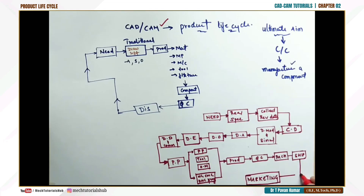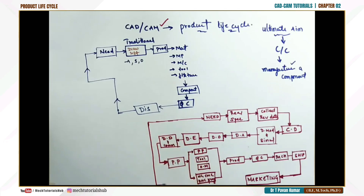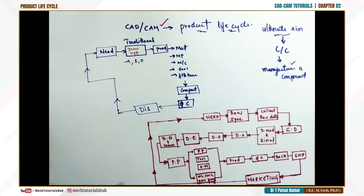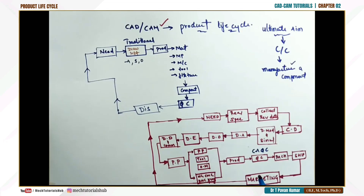If the component is required by a specific company, it is shipped directly. If it is going into the general market, it goes through marketing. After marketing, the reputation of the component and the company improves if the product is perfect. This is the latest product life cycle after the introduction of CAD/CAM. It starts with the need and ends with marketing or shipping, with Computer Aided Quality Control in between.